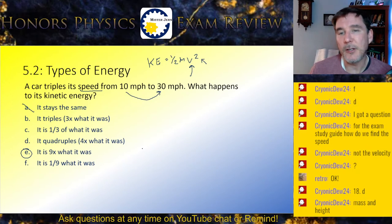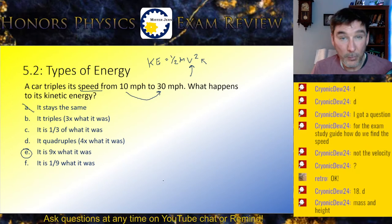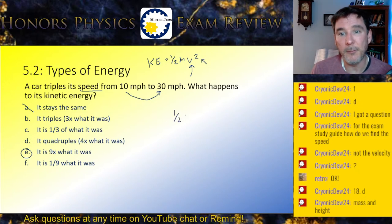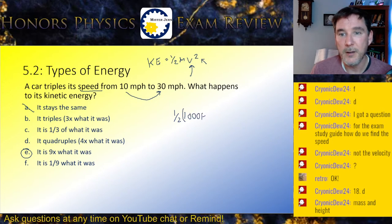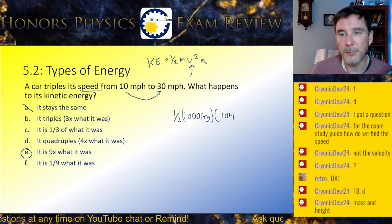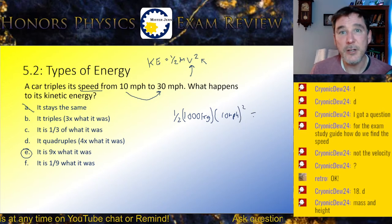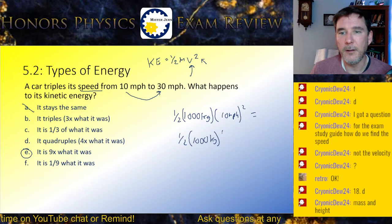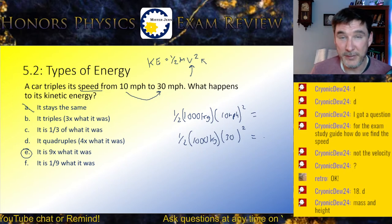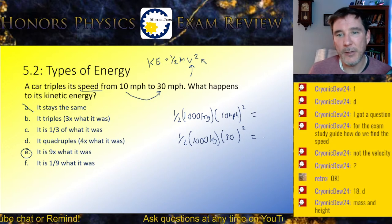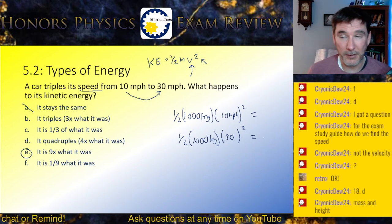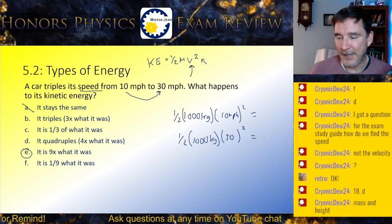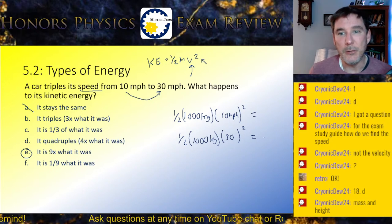If you're ever not sure about these types of questions, one surefire but slower method is to just make up some numbers. Say the mass is 1,000 kilograms — totally made up — and calculate KE at speed 10 and again at speed 30. You'll find the energy is 9 times as much. That's how you can definitely be sure if you're second-guessing yourself. Just make up numbers that fit the problem.